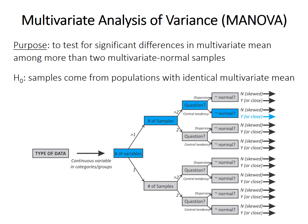The purpose of MANOVA is to test for significant differences in the multivariate mean — where you have more than one variable per sample — among more than two normally distributed samples. The null hypothesis is that the samples come from populations with identical multivariate means, or equivalently, there's no difference in the multivariate means between the populations they come from.